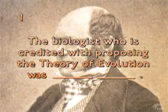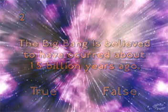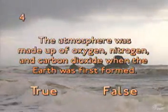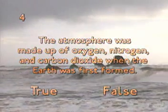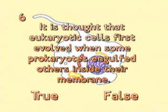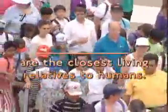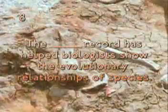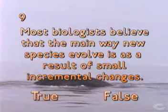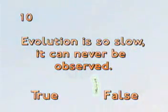The biologist who is credited with proposing the theory of evolution was... The Big Bang is believed to have occurred about 15 billion years ago — true or false? Our solar system was first formed how many billion years ago? The atmosphere was made up of oxygen, nitrogen, and carbon dioxide when the Earth was first formed — true or false? Life first began as a tiny cell about 3.5 billion years ago. It is thought that eukaryotic cells first evolved when some prokaryotes engulfed others inside their membrane — true or false? Are the closest living relatives to humans? The fossil record has helped biologists show the evolutionary relationships of species. Most biologists believe that the main way new species evolve is as a result of small incremental changes — true or false? Evolution is so slow it can never be observed — true or false?